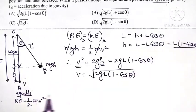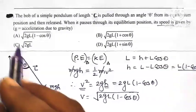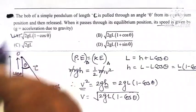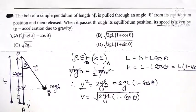Out of four options, 2gL(1 - cos theta) means option A is the correct option for this question.